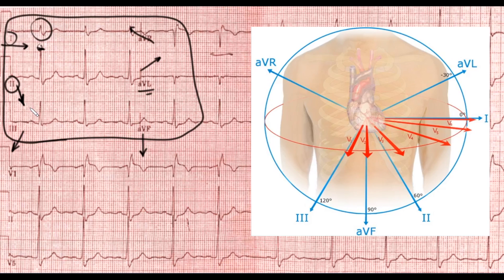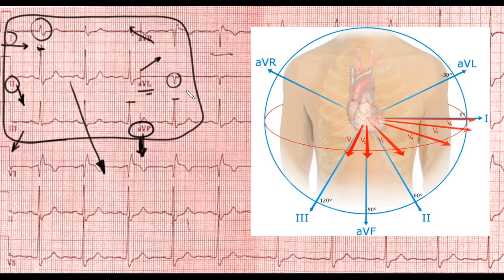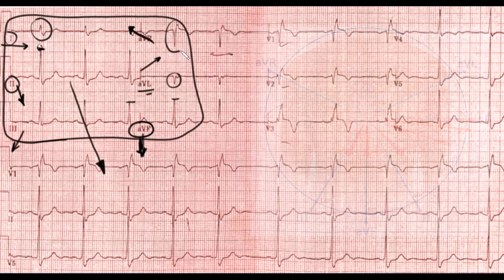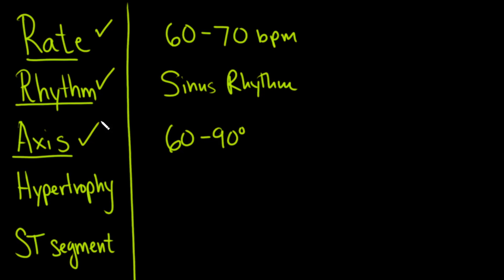So the axis is going in this direction — almost parallel to lead II. If that's the case, it should be positive in lead III because it's going almost in the same direction, and that's the case. Since it's going almost parallel to AVF, it should also be positive, and it is. Because it's going almost in the opposite direction to AVL, it should be negative, and it is. Compared to AVR it should be the most negative, and that's where you have the biggest negative discharge. So the overall axis is somewhere between 60 and 90 degrees.